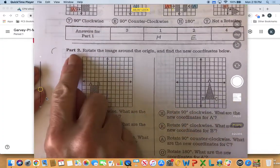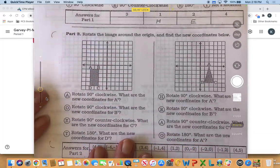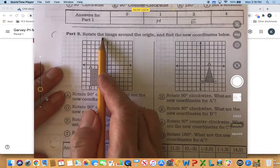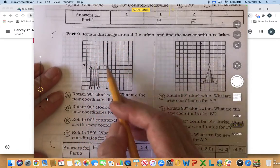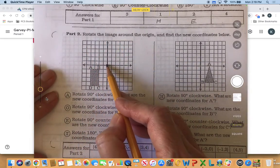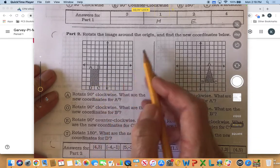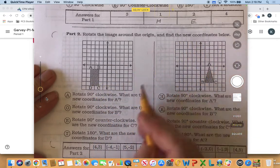All right, so this is part two. In part two we are going to be rotating the image around the origin—so that's the origin and here's our image—and find the new coordinates below.